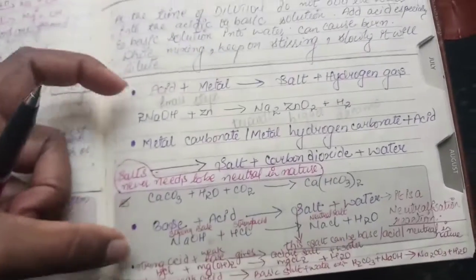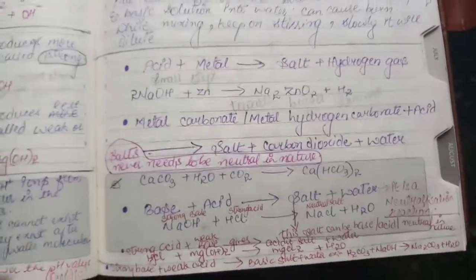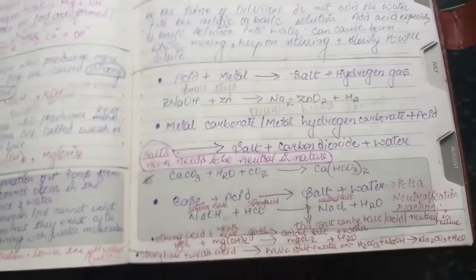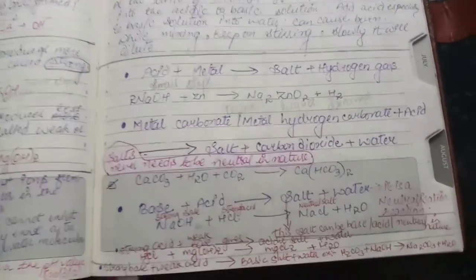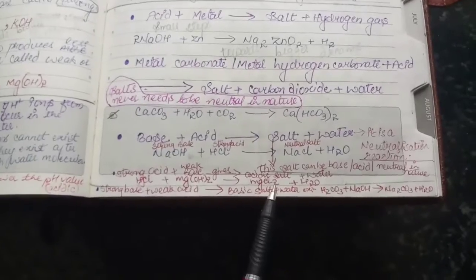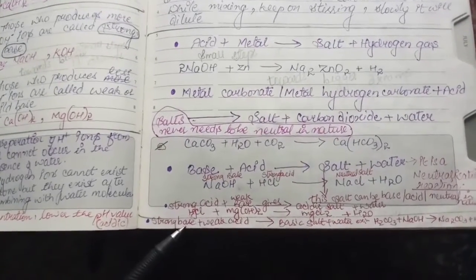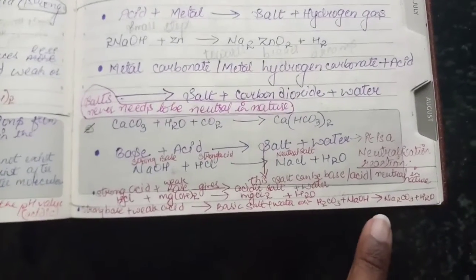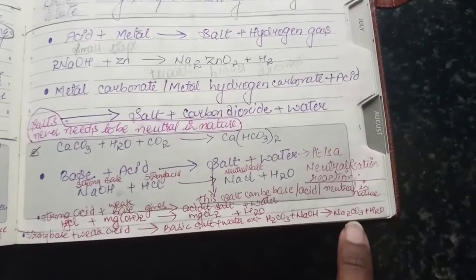Strong acid plus weak base gives us acidic salt. It makes sense, right? Because strong acid has a strong hold over here, and we have a weak base. That's the reason we have acidic salt. MgCl2 is acidic salt in nature. Now if we have strong base and weak acid, base is going to take hold. So basic salt plus water is going to be our product. And what is the equation related to this? H2CO3 plus NaOH. NaOH is the strong base, and H2CO3 is a weak acid. Na2CO3 is going to be our result with water.